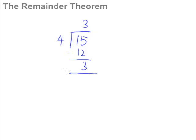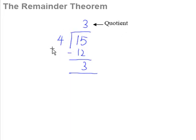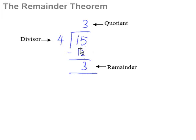Now, the remainder theorem works on this principle. But there are certain things we need to know first. All of you should know that this number here, 3, is called the quotient. And this number 4 here is called the divisor. And of course this number here, 3, is called the remainder. How about this number 15 here? This number 15 has got a name for it too — it is called the dividend.